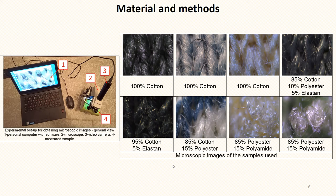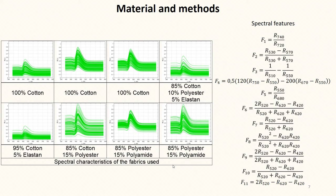Microscopic analysis of the textile fabrics was performed. For this purpose, an experimental setup shown in the figure was used. The following figure shows microscopic images of samples from different fibers. They are used in the identification of fibers in textile fabrics. The spectral characteristics of textile fabrics in the range 390 to 780 nanometers were obtained. A total of 11 spectral features were calculated from the spectral characteristics using the formulas presented on the screen.